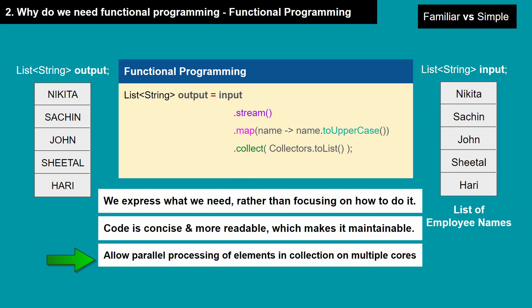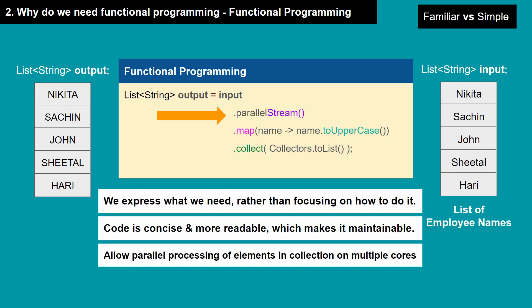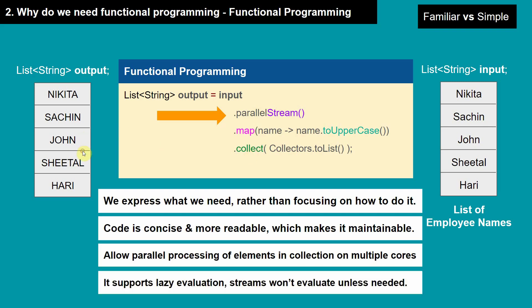Another feature of functional programming is that it allows parallel processing of elements. If you replace stream with parallel stream, the elements will be processed in parallel on multiple cores. If you have thousands of elements in your input list, it will process them on different cores using fork-join and then collect them into the list, improving performance significantly.